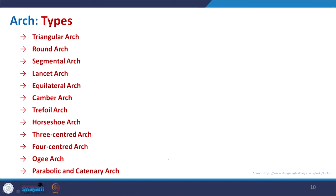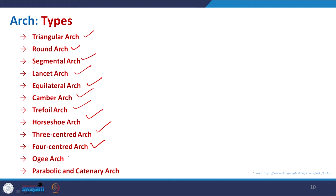The type of arch is based on geometry. There are quite a number of different types: the triangular arch, round arch, segmental arch, lancet arch, equilateral arch, camber, trefoil, horseshoe, three-centered, four-centered — and you can even have five-centered and six-centered arches. Then there is the ogee arch, and one of the most important types is the parabolic and catenary arch.